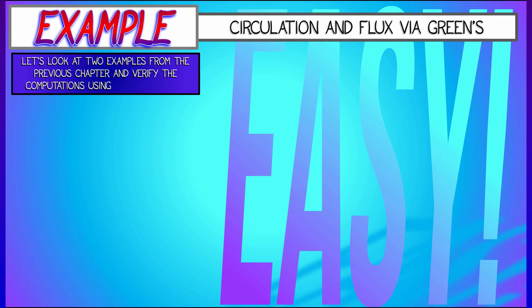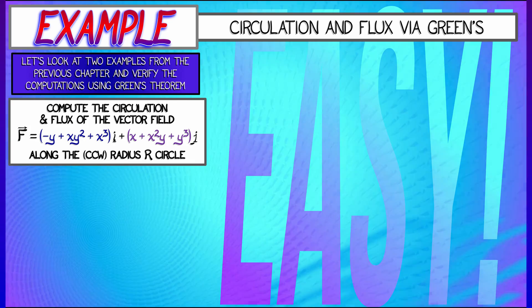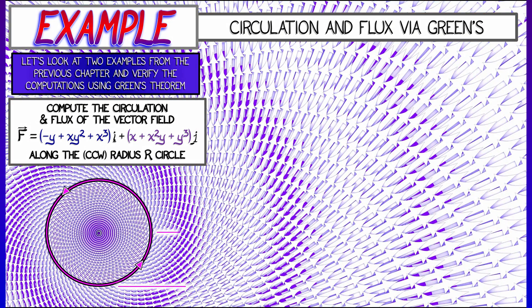Remember the two examples that we did in the previous chapter associated to the vector field f expressed as quantity minus y plus xy squared plus x cubed i plus quantity x plus x squared y plus y cubed j. And we want to compute circulation and flux along the radius r circle based at the origin. That's our gamma. Remember what that vector field looks like, how it spirals around and then goes out.